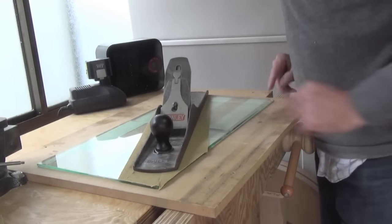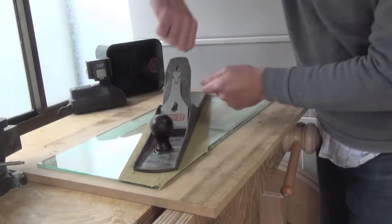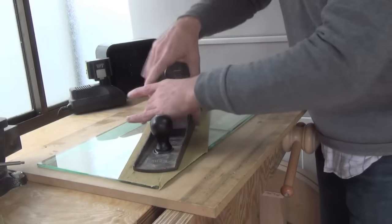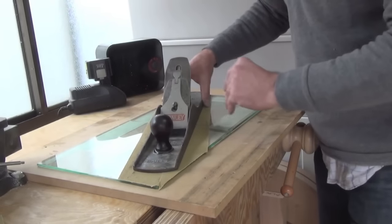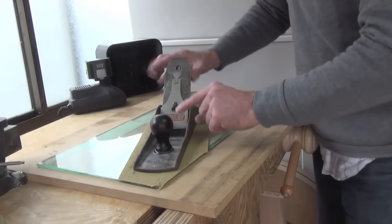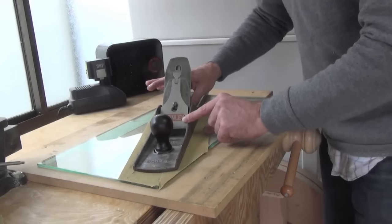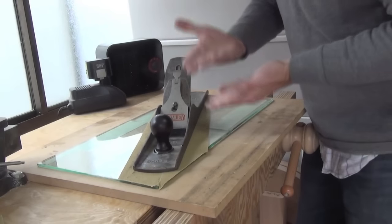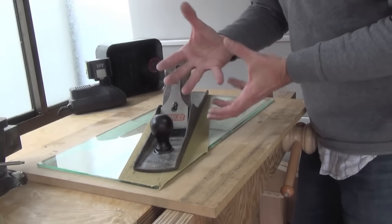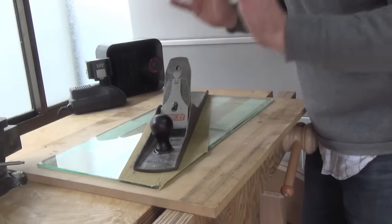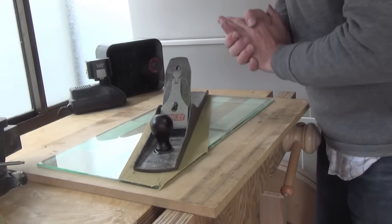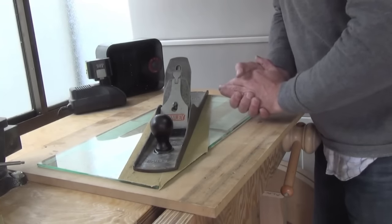The reason the plane is assembled is that when you put the plane together, it creates slight, very subtle tensions on the sole. So if you flatten the sole without the parts in place, then when you put the parts on, suddenly the sole will move slightly out of true and all your work will have been for nothing. So when you're flattening a plane, make sure it's fully assembled.